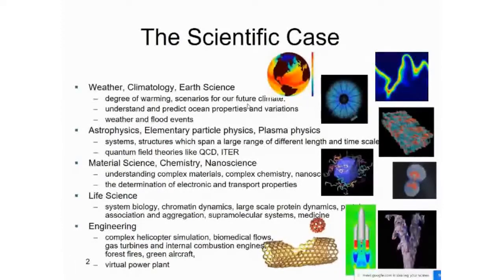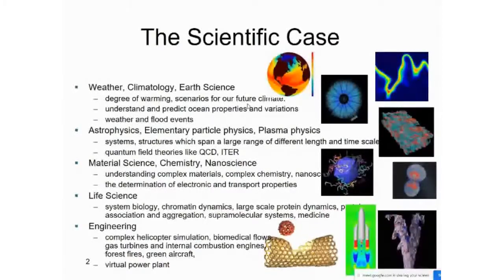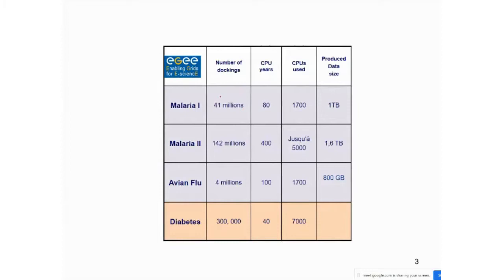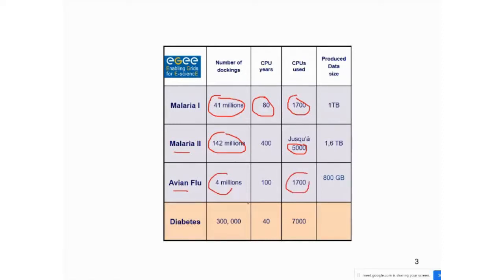These problems cannot be solved by normal programming methods — you need something called intelligence, and that is what we will be dealing with here. For example, when developing drugs for malaria: malaria type 1 required 41 million dockings, and using a single CPU it may take 80 CPU-years; they used 1,700 CPUs to solve it. For malaria type 2 it required 142 million dockings using around 5,000 CPUs. For avian flu, 4 million dockings were needed using 1,700 CPUs. For diabetics, around 3 lakh dockings are being attempted using 7,000 CPUs.